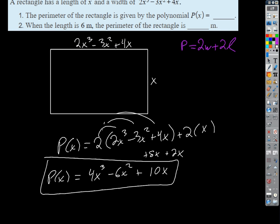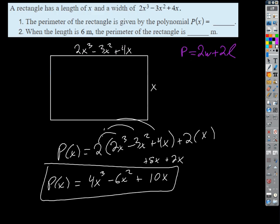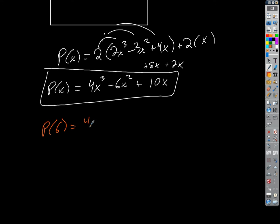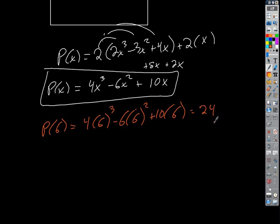When the length is 6 meters, the perimeter is what? We said the length was x, so we plug in 6 for x. That corresponds to x = 6 in our drawing. So we take the perimeter function and plug in 6: 4(6³) − 6(6²) + 10(6), which gives us our numerical answer.